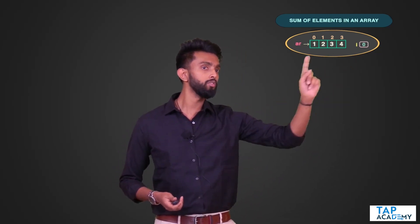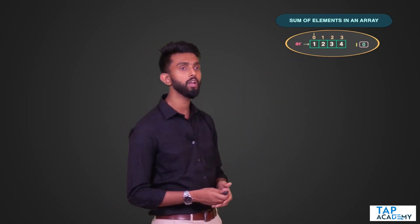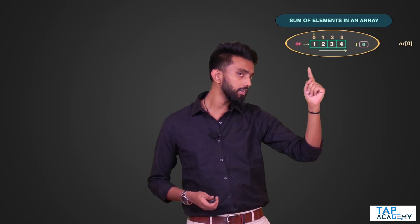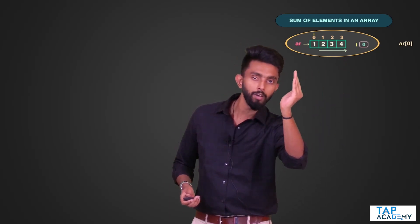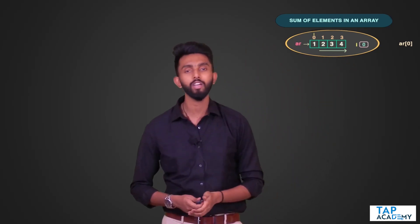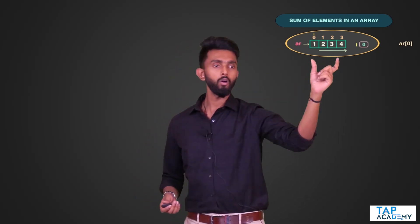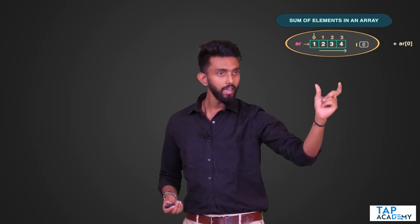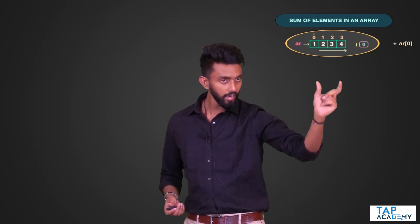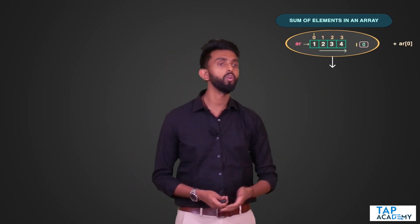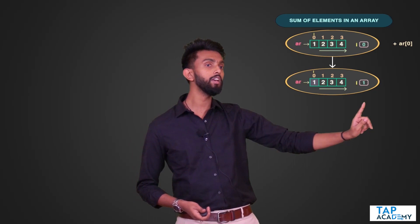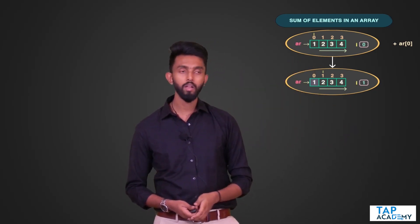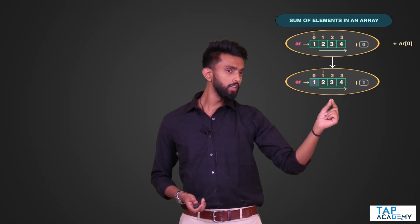I want to reduce the size. I initially have I as zero, which points to the first element. So I keep AR[0] aside and find the sum of the rest. I call the same function again but with I incremented — so I becomes 1, moving to the next element.